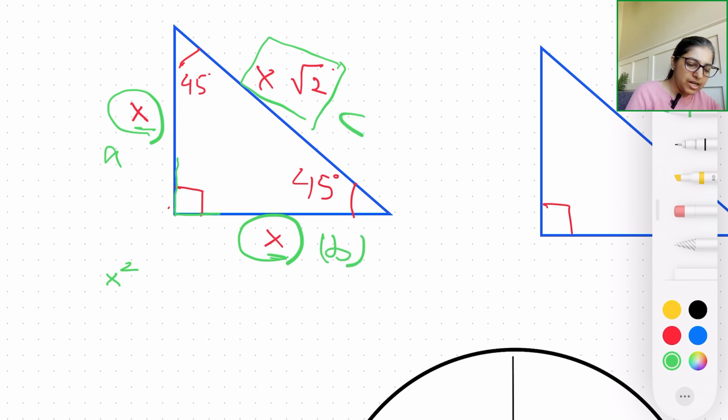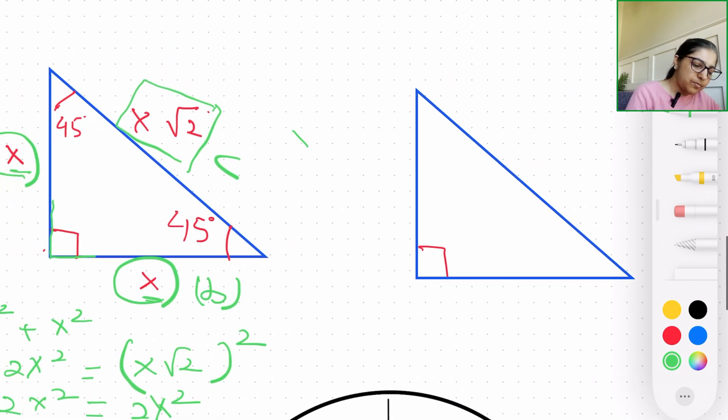So obviously, again, if you take the a² + b² formula, x²—if this was a and this was b and the hypotenuse was c—x² + x² is 2x², and this is equal to x√2 squared. So obviously we get 2x² on the c² side, and that is exactly what we have.